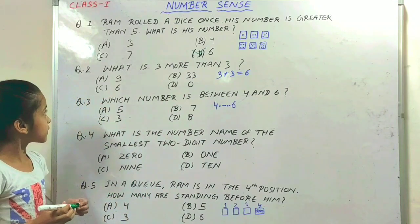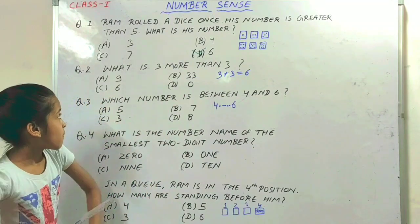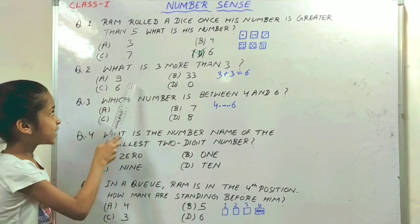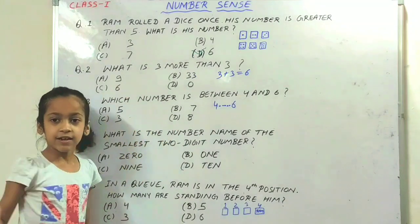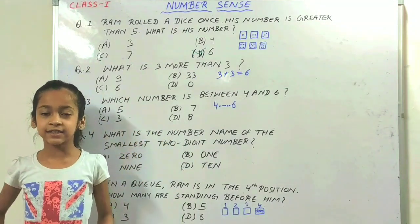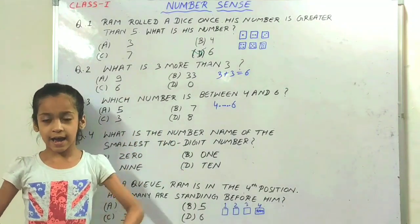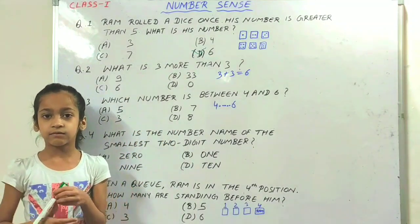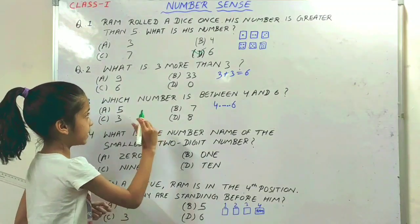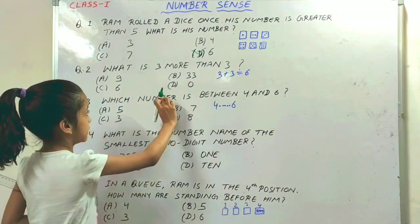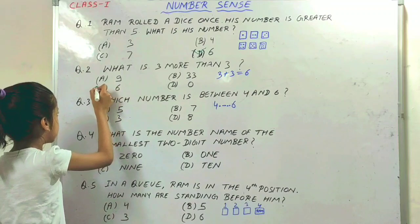The next question is: what is 3 more than 3? In this question we have to add 3 and 3. So if we add them, the answer is 6.